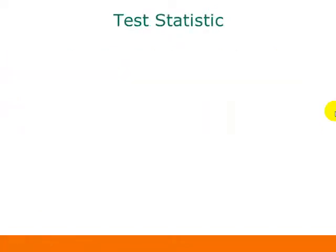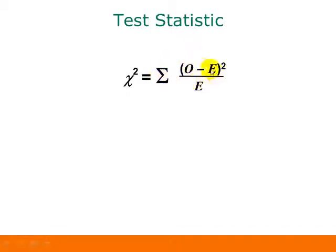To find the test statistic for this hypothesis test, we have a formula. The summation symbol tells us that for every cell in the contingency table, we take the observed frequency from our sample data, minus the expected frequency, square that, and then divide by the expected frequency.